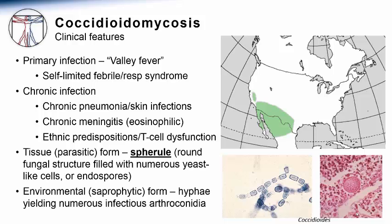In terms of the mycological features, the tissue or parasitic form of Coccidioides species is known as the spherule. In the far right panel of the slide, you can see this round fungal form filled with smaller individual fungal cells known as endospores. The large form called the spherule is the characteristic histological feature that defines coccidioidomycosis. Growing in the environment, the hyphal form is demonstrated in the left lower panel of the slide, where the hyphae can be seen breaking down into the individual infectious cells known as arthroconidia.